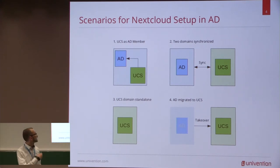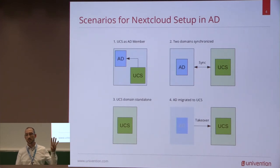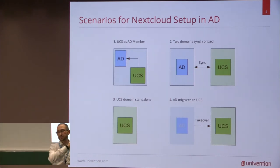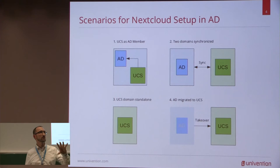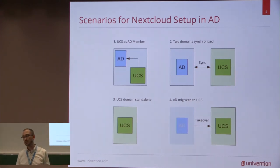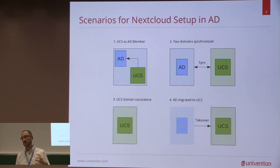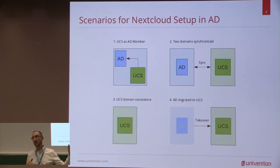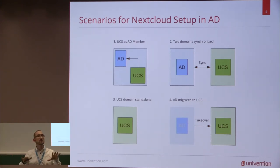The scenarios are: the first one is you have the appliance based on UCS in an Active Directory environment where UCS is just part of Active Directory — it's called an AD member. You can use all the users in your Active Directory system and they can log in. The second option is, for various reasons, you want to have two separate domains and just synchronize the users and groups from your Active Directory to the appliance or to UCS, keeping two separate environments.